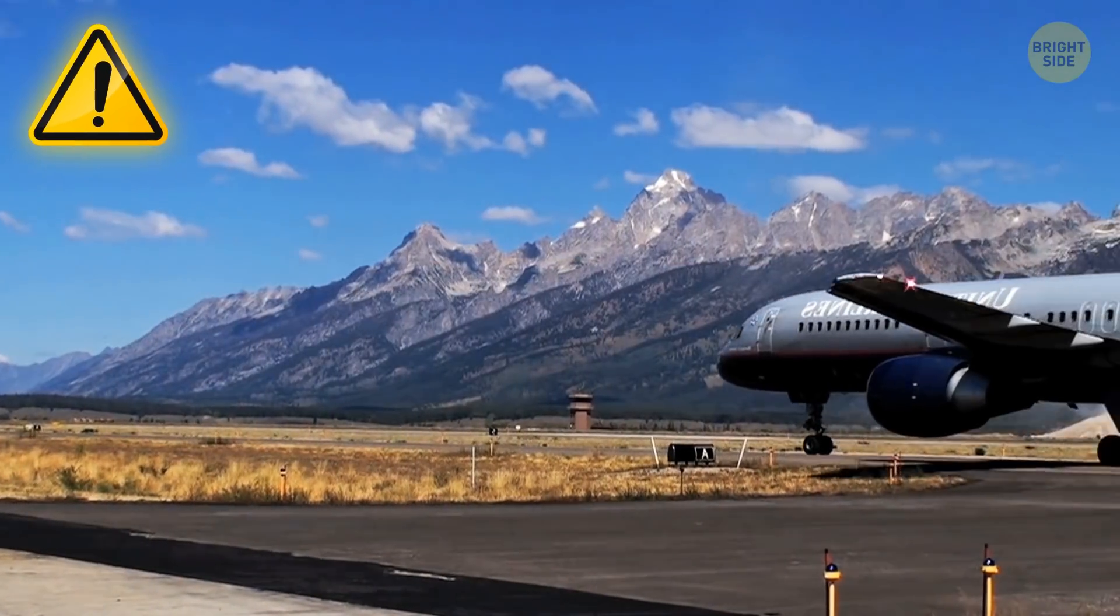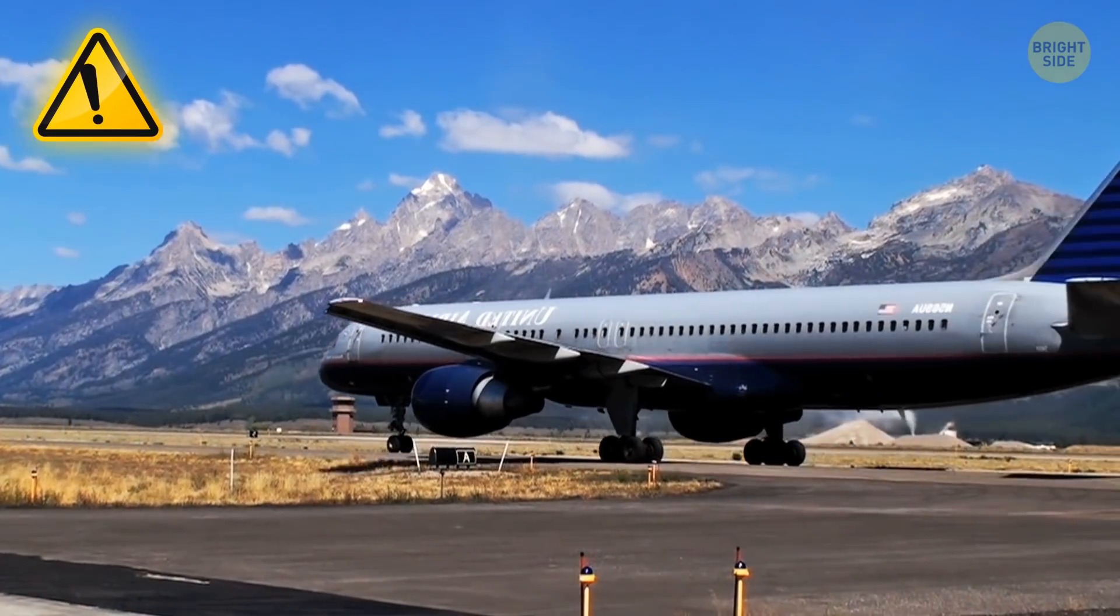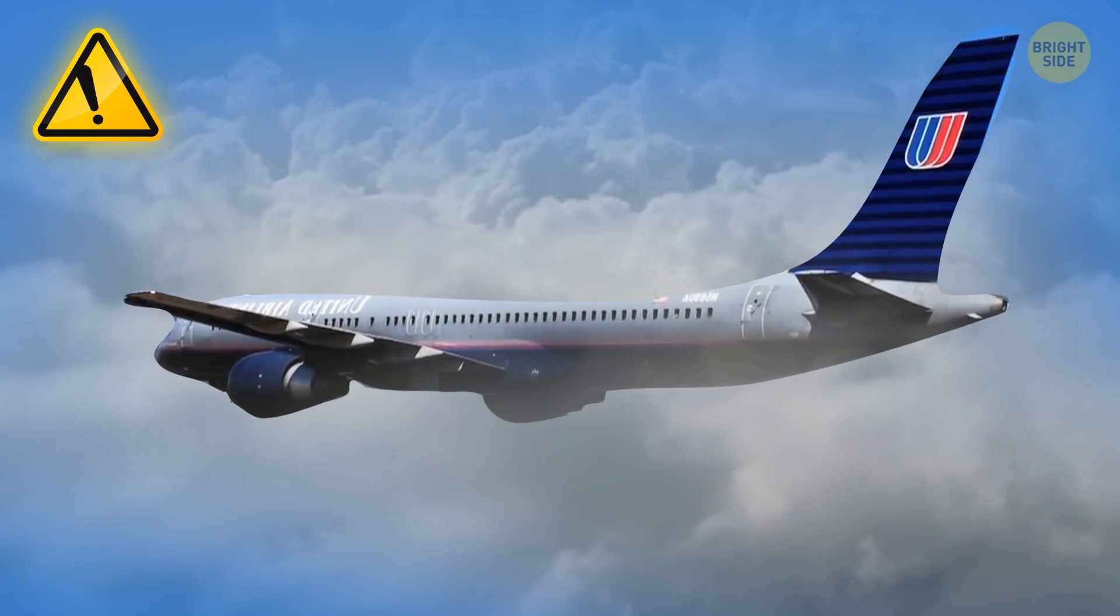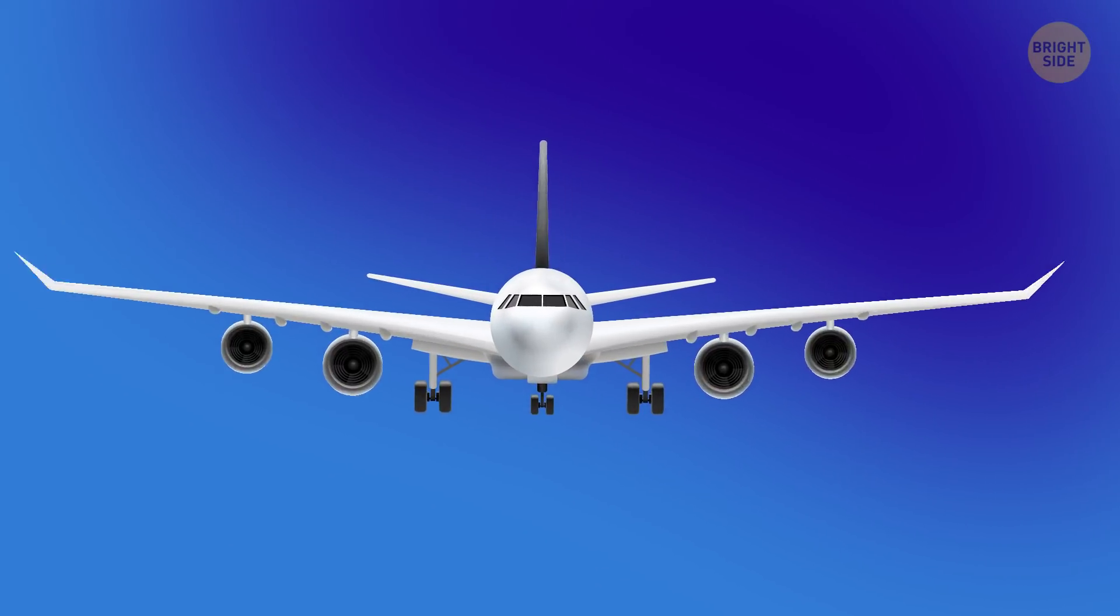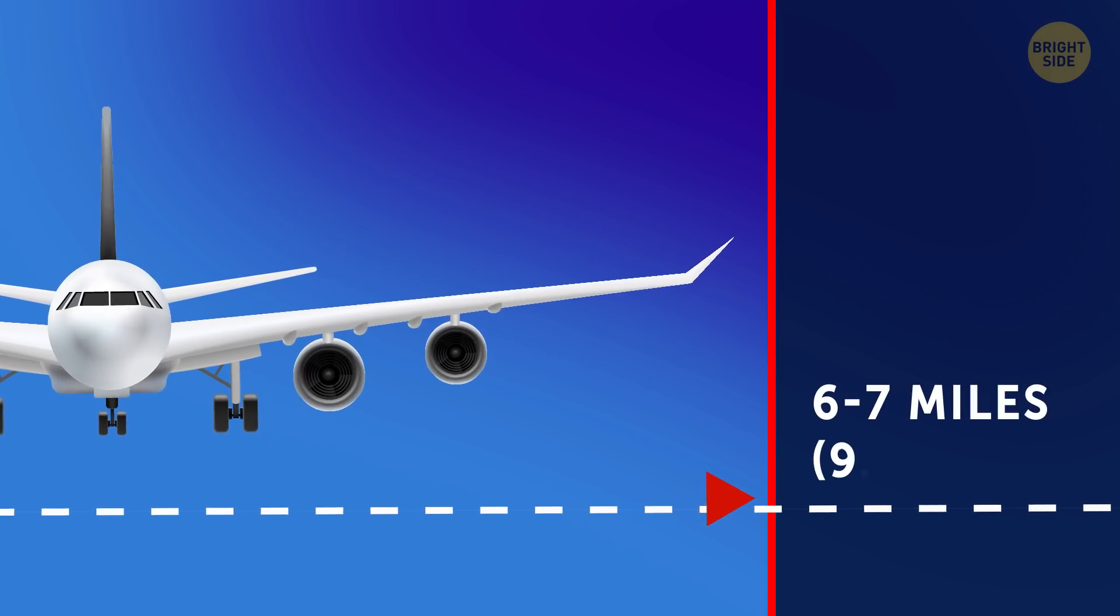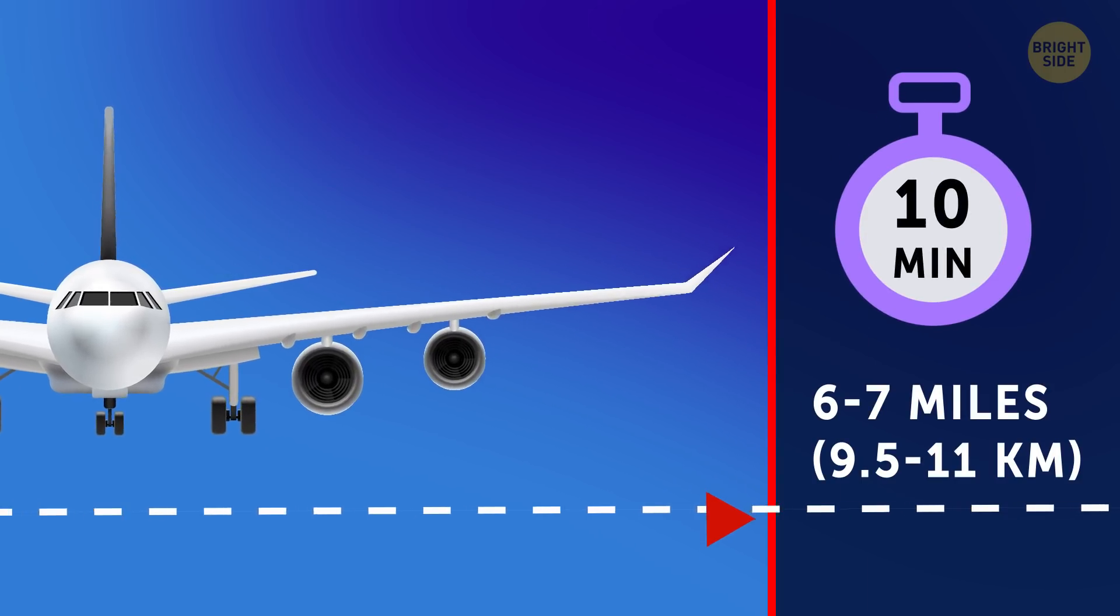As soon as a large jet takes off from an airport, the first thing pilots do is take the plane as high as possible, as fast as they can. Few people know that the average passenger airplane usually reaches its cruising altitude of 6-7 miles in the first 10 minutes of the flight.